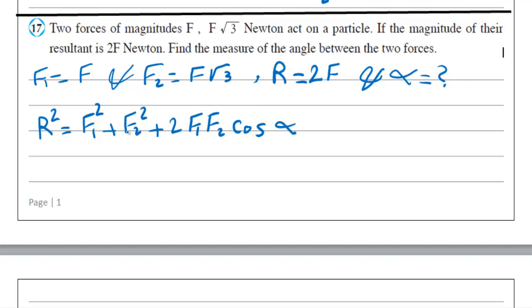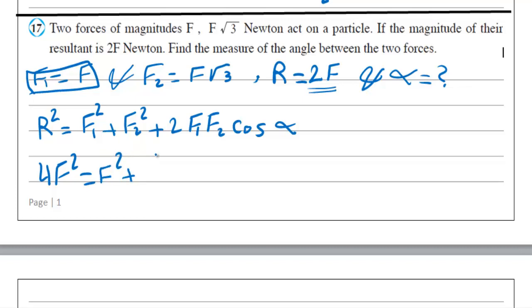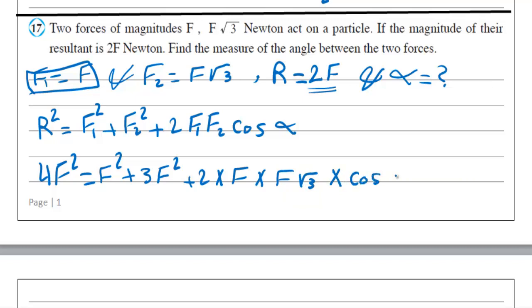We use the rule: R² equals F1² plus F2² plus 2·F1·F2·cosine α. Substituting: R equals 2F so R² equals 4F². Then 4F² equals F² plus 3F² plus 2·F·(F root 3)·cosine α.